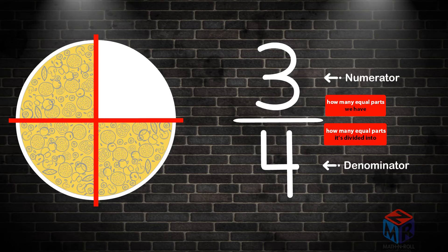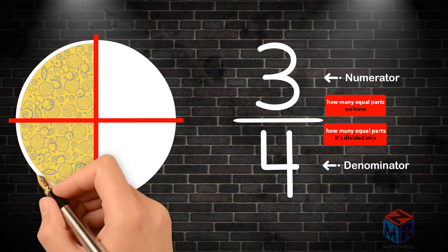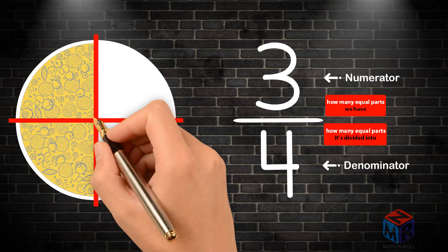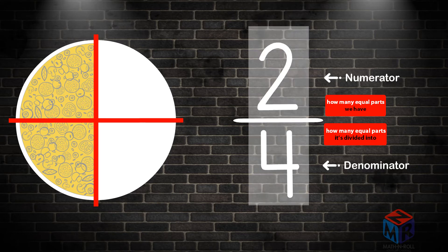What if somebody came by and ate one more piece? The pizza is still divided into 4 parts, so the bottom number — the denominator — would still be 4. But we only have 2 of those parts left, so that means the top number — the numerator — would change to 2. So now we have 2 over 4 of the pizza. The numerator is 2, the denominator is 4, and the fraction is 2 over 4.